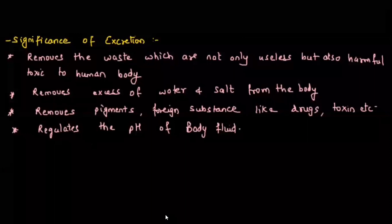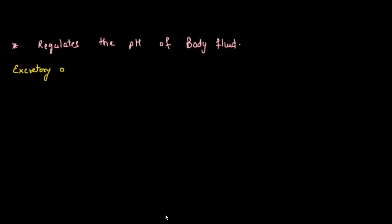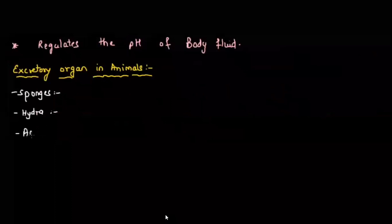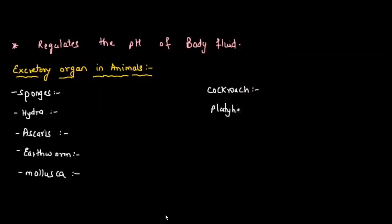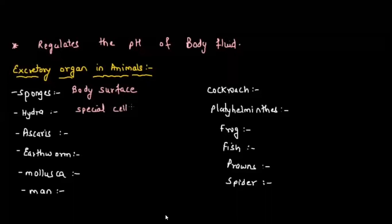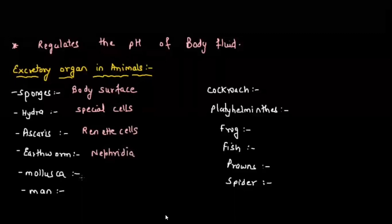Let's look at excretory organs in different animals. Sponges excrete through the body surface via small pores called ostia. Hydra excretes through special cells. Ascaris excretes through renette cells. Earthworm excretes through nephridia. Mollusca excretes through the organ of Bojanus.